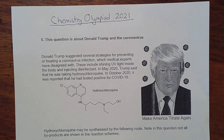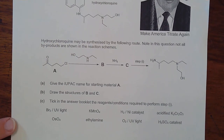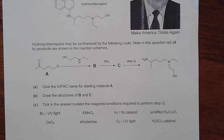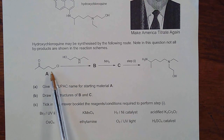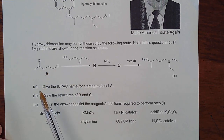Some of the work involves guesswork and some will come from informed chemistry. The first part of the question asks about the first part of the synthetic route, going from A to B to C and then finally to the target structure. The first question asks for the IUPAC name of a particular molecule, worth one mark.